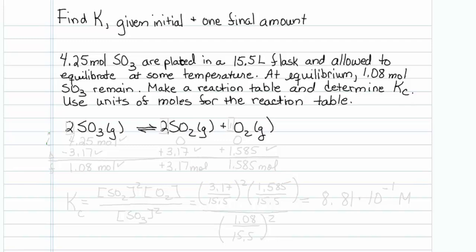This is how to find K given an initial concentration and one final amount. 4.25 moles of sulfur trioxide are placed in a 15.5 liter flask and allowed to equilibrate at some temperature. At equilibrium, 1.08 moles SO3 remain. Make a reaction table and determine Kc.